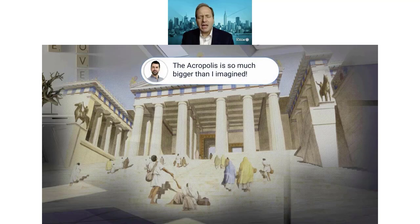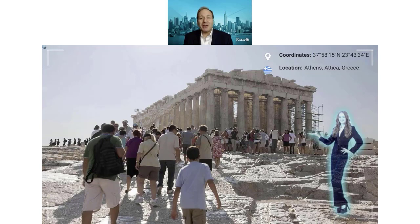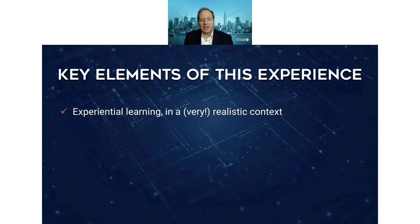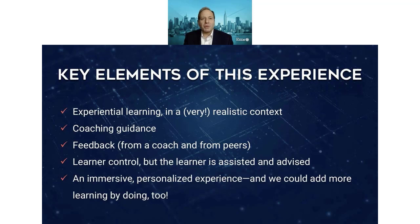Suppose the student left the virtual world and visited Greece today — he might have the AI coach with him in augmented reality, pointing out things and saying, "Remember when we saw this? Remember how this used to look? Here's what's changed." He also could have his friends with him, either online from exploring ancient Greece together, or they could join him through a camera so they can look themselves. The possibilities are limited only by creativity and to some degree technology, but we have a lot of technology. Key elements of this experience: experiential learning in a very realistic context; coaching guidance and feedback from a coach and from peers; learner control with assistance and advice; and an immersive, personalized experience.